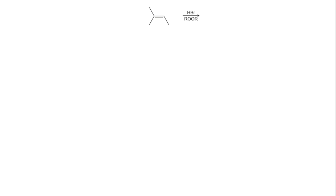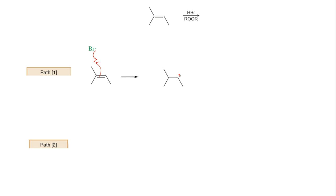We have seen that in the presence of peroxides, bromine radical is the electrophile that adds to the alkene. Therefore, just like the H-positive electrophile, it has two paths to add to the alkene. Path 1 is when the bromine radical adds to the more substituted end of the carbon-carbon double bond, which generates the radical carbon on the less substituted end — this is a secondary radical. Path 2 is when the bromine radical adds to the less substituted end of the carbon-carbon double bond, which generates the radical carbon on the more substituted end — this is a tertiary radical.